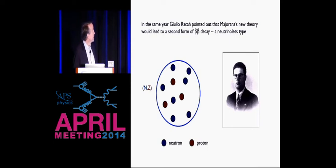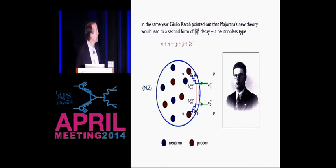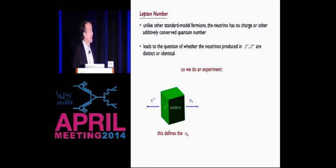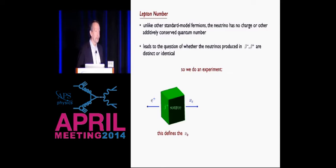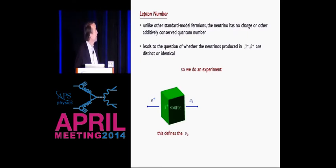So if we have a nucleus with neutrons and protons, one beta decay can occur and produce a neutrino, and that neutrino is then reabsorbed on another neutron to produce a final state with two protons and two outgoing electrons. This is interesting because it has to do with a very fundamental conundrum in labeling the particles of the standard model. All the other standard model particles have a charge, and that charge has to be additively conserved in all reactions. The neutrino is the only exception.